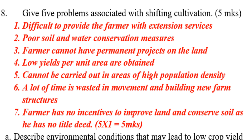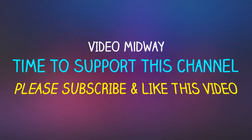Next question: give five problems associated with shifting cultivation. Number one, it is difficult to provide the farmer with extension services. Number two, poor soil and water conservation. Number three, the farmer cannot have permanent projects on the land. Number four, low yields per unit area are obtained. Number five, it cannot be carried out in areas of high population density. Number six, a lot of time is wasted in movement and building new farm structures. And the last one — the farmer has no incentives to improve the land and conserve soil as he has no title to it.